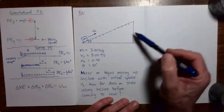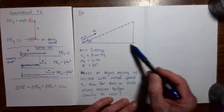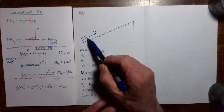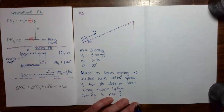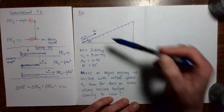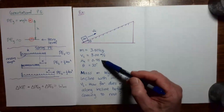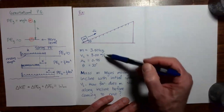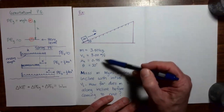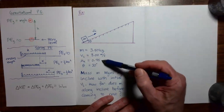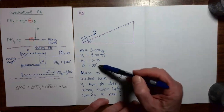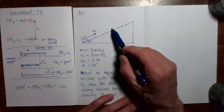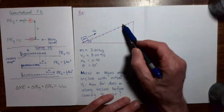Here's the example problem. We have an incline, and a mass starts at the bottom of the incline moving up with some initial speed. There is friction between the mass and the incline, and the coefficient of kinetic friction is given. Given the mass of 3.5 kilograms, initial speed of 8 meters per second, coefficient of kinetic friction 0.45, and the angle of the incline 30 degrees, we want to know how far up the incline the mass goes before it comes to rest due to friction and gravity.